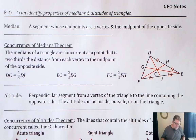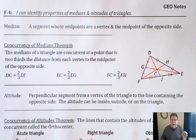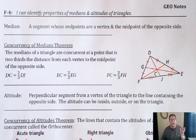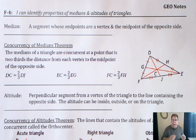We're going to continue our quest here with section F4 to identify properties of median lines and altitudes of triangles. We've already talked about circumcenters and incenters. Those are the points of concurrency — perpendicular bisectors form a circumcenter where you could draw a circle around a triangle, and an incenter comes from angle bisectors, where that point of concurrency is the center of a circle inscribed inside a triangle.